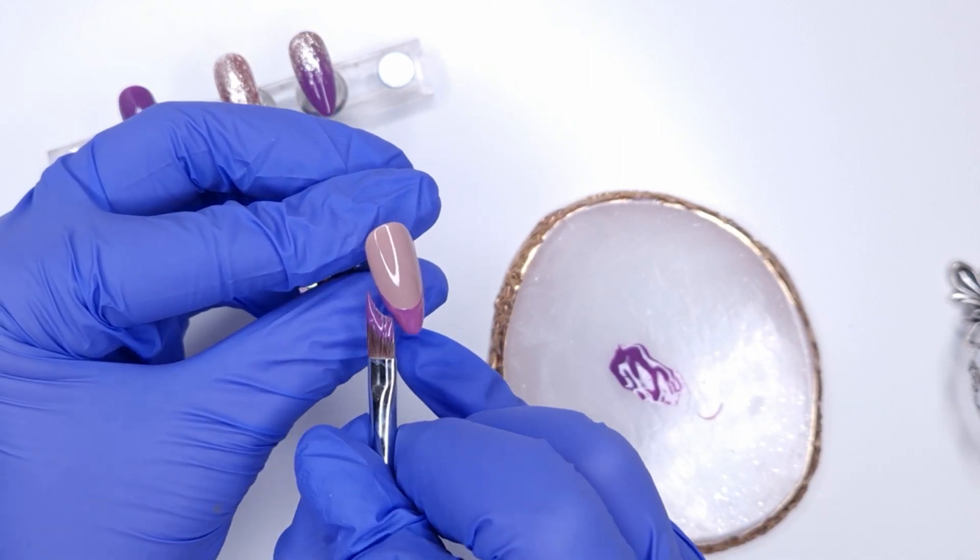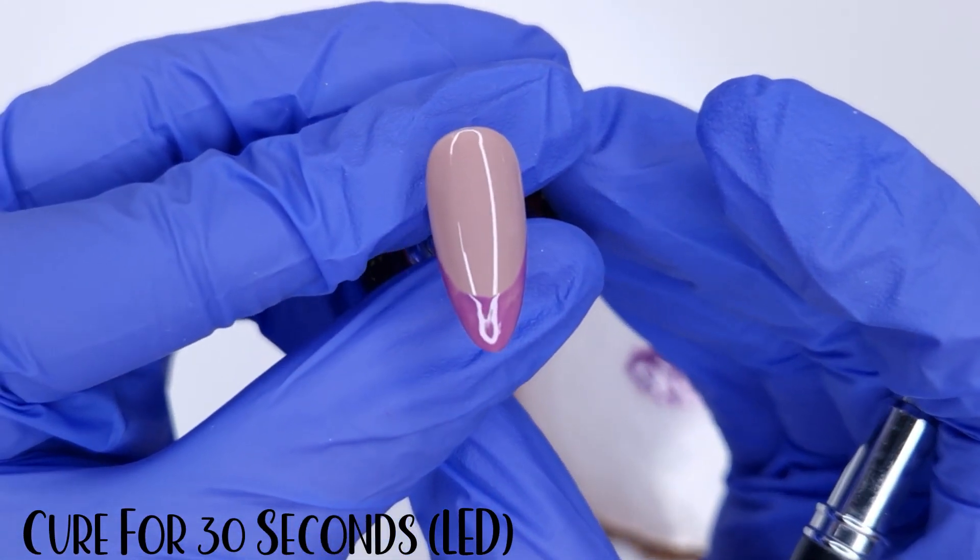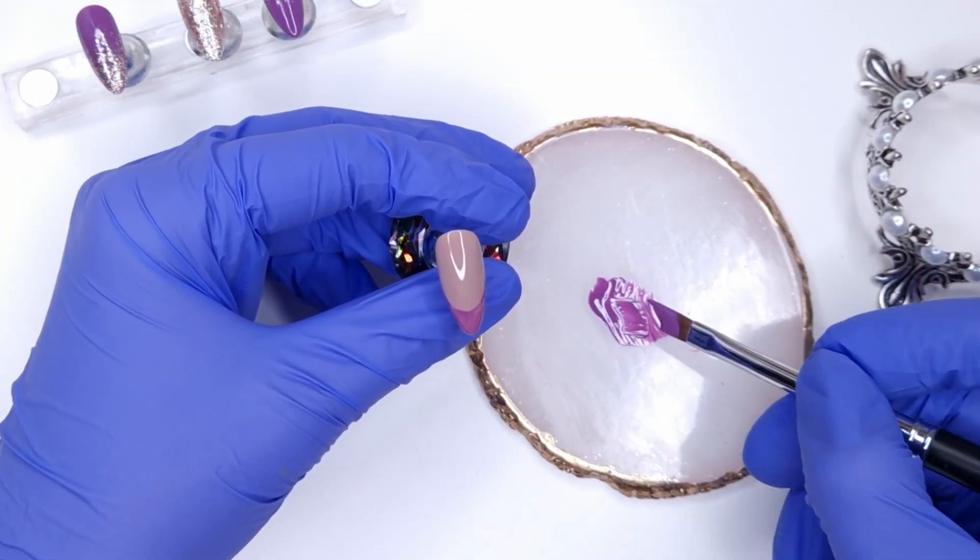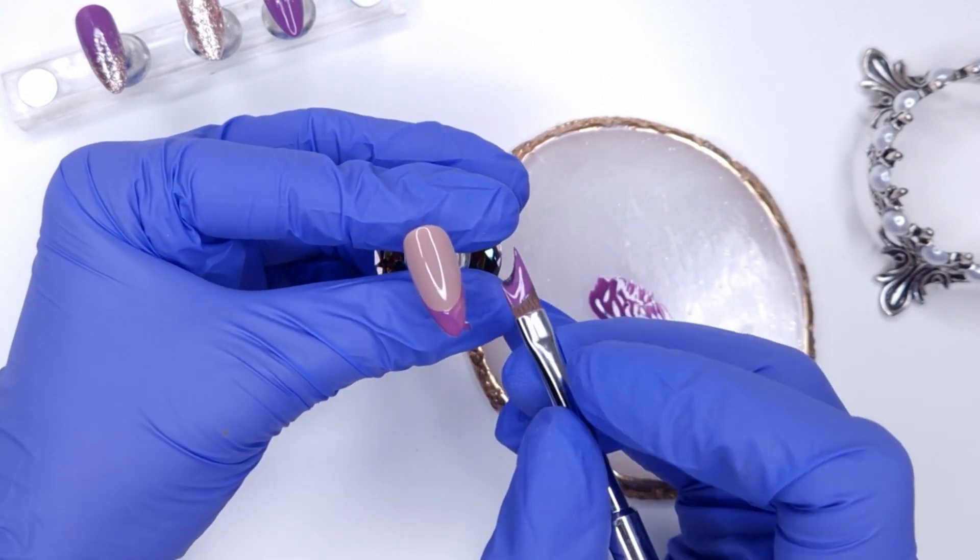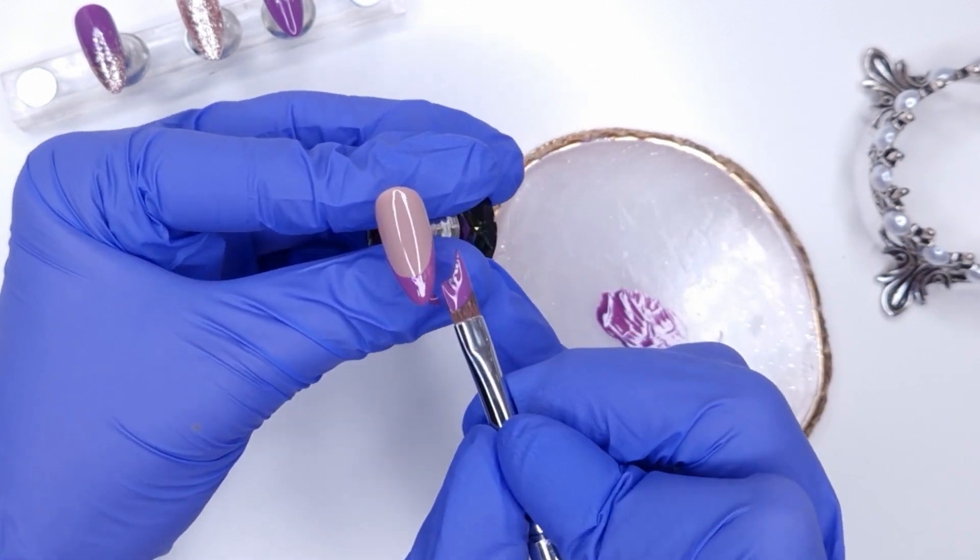And then just coming in using the very tips of the brush just to bring that down and widen the wings of the smile line. And then I've done a really thin coat so we're going to come in and do a second coat just to really make that coverage from the color come through. So on the second coat you are literally repeating the steps of the first coat.